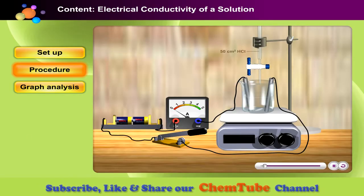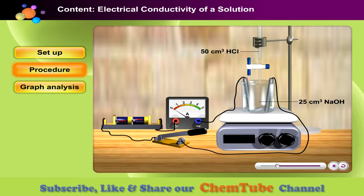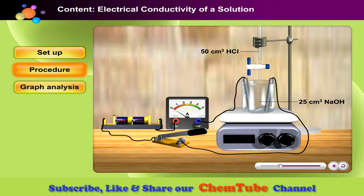Put 50 cm³ of hydrochloric acid in a burette and 25 cm³ of sodium hydroxide in a beaker. Then, prepare a normal setup for a titration, an electrolytic cell.